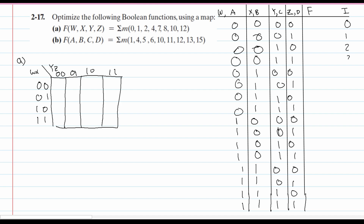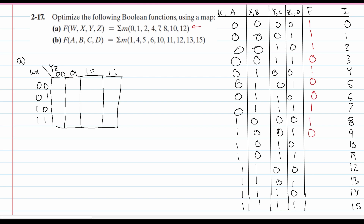We can now write out our indices. We're going to have 0, 1, 2, 3, 4, 5, 6, 7, 8, 9, 10, 11, 12, 13, 14, and all the way to 15. Now we can start off with our functions. We're going to start with F first. We have our min terms, so we're going to write these out. Whatever is listed in the min term list, we are just going to have a 1. Whatever is not listed, we are just going to put a 0 there, because it is Boolean algebra — Boolean functions.